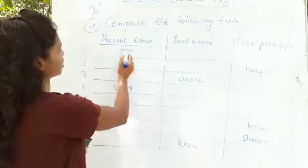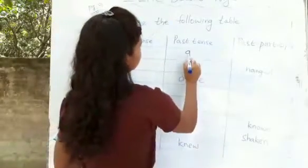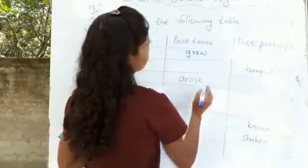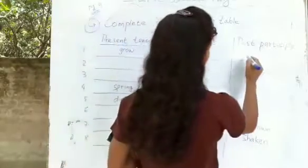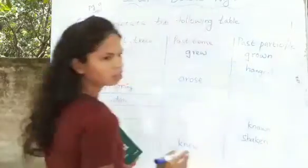In your first, it is given grow. So grow, past tense, what it will be? Grew. Then past participle, grown.